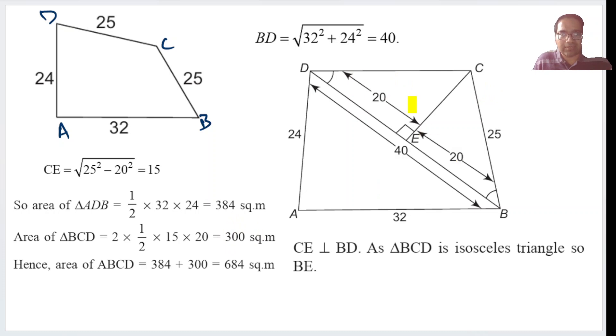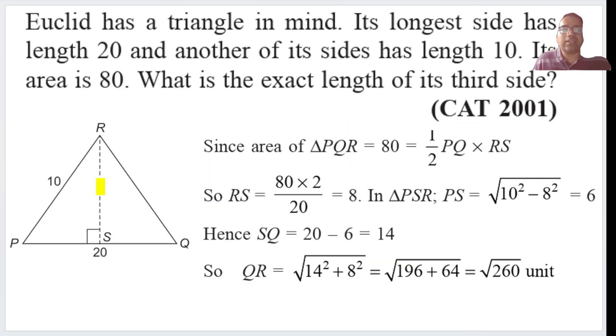So area of this entire part is 300 square meters. Area of this part is 384 square meters. The total is 684 square meters. This is such a nice problem. Next one, simple problem using only Pythagoras theorem.